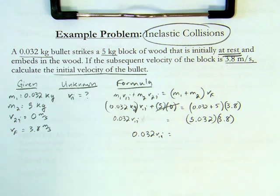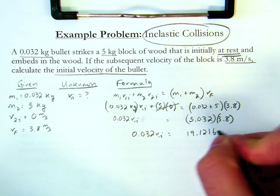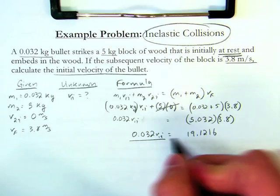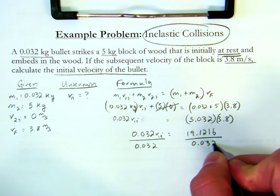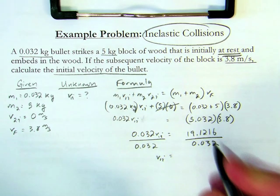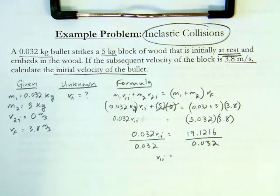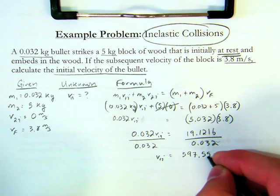One more step, divide both sides by 0.032, and I'm left with my initial velocity of the bullet is going to be 19.1216 divided by 0.032, which is going to be 597.55 meters per second.